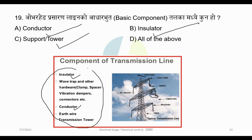There are basic options here. Option A, Option B, or Option C are each basic components of the transmission line. Next question.